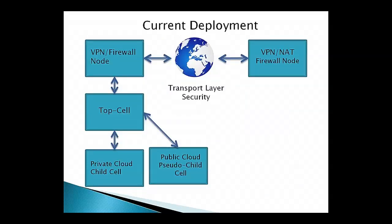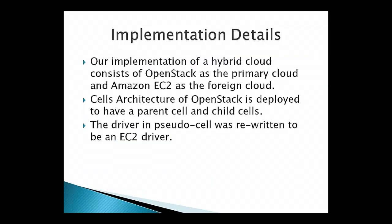This is the way this has been deployed. In the bottom left-hand corner you see three cells: the top cell, the private cloud cell representing OpenStack, and a pseudo-cell representing Amazon. These bottom three cells make up the hybrid cloud, connected through a VPN node across the internet to Amazon, which has a VPN on the other side. Looking at the implementation details: OpenStack is the primary cloud, Amazon is the foreign cloud, and we are leveraging the cells architecture. The pseudo-cell is a data structure containing statistics like utilization of the cell.